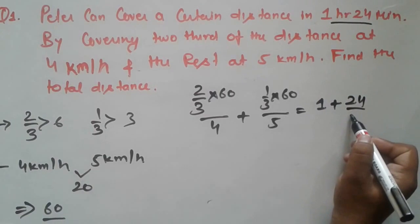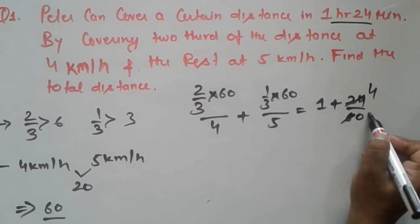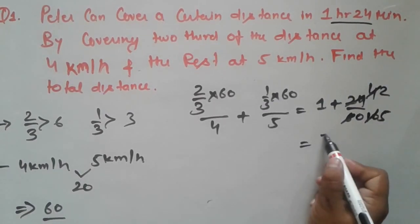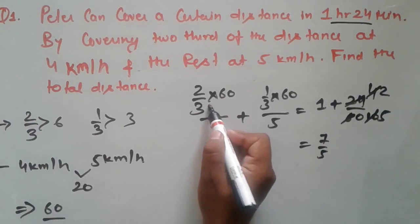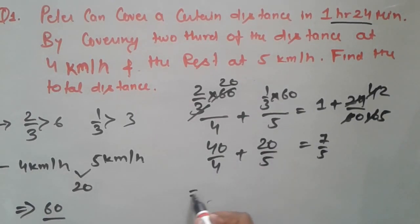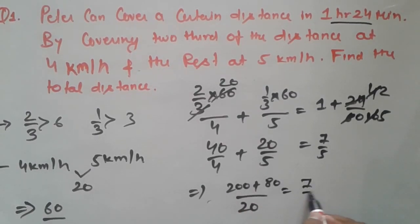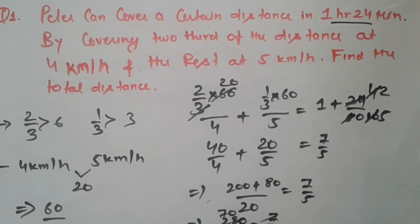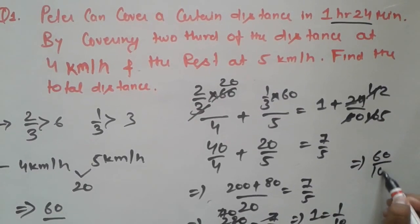Convert 24 minutes to hours: 24/60 = 2/5, so 1 hour 24 minutes = 7/5 hours. Two-thirds of 60 is 40; so 40/4 + 20/5 = 7/5. Taking LCM of 4 and 5 is 20: (200 + 80)/20 = 280/20 = 7/5. So the value of 1 unit equals 1/10. We assumed 60 as the total distance, so the value of 60 units is 60/10 = 6 km. So 6 km is the final answer.